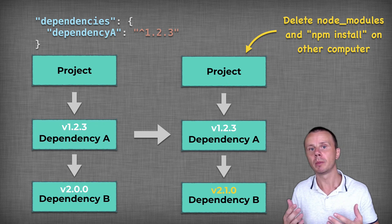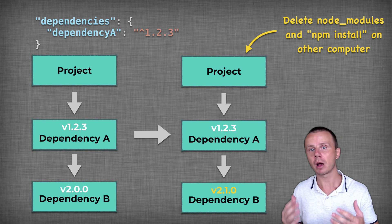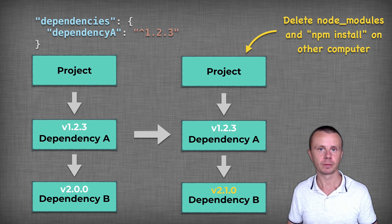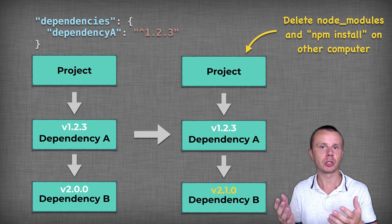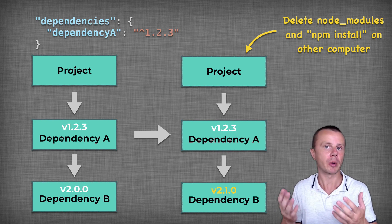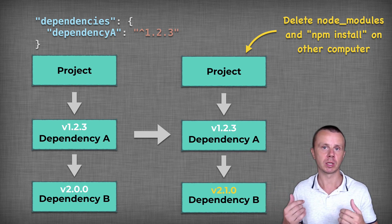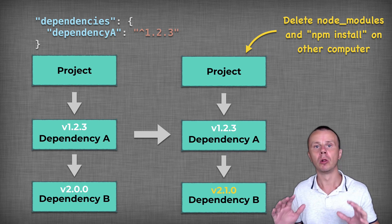That's the problem the lock file solves. If you use the lock file, it lists the exact versions of all packages used in your project. You can then delete the node_modules folder and publish your package to a GitHub repository, and everyone who pulls that repository and runs npm install will install the same exact versions of all packages.